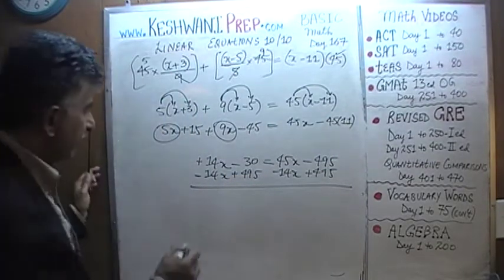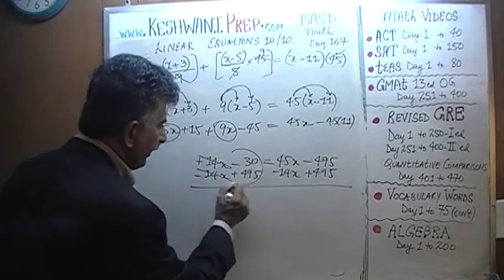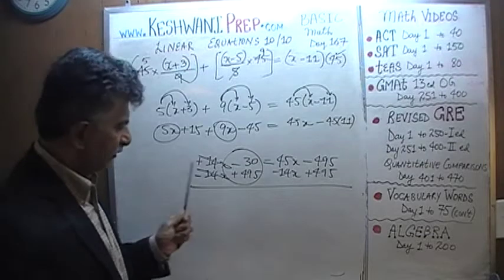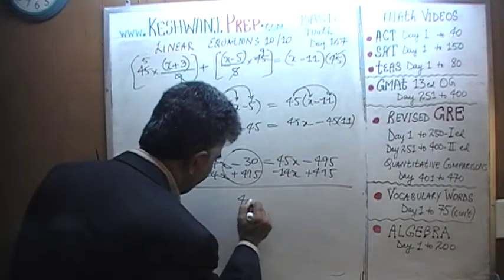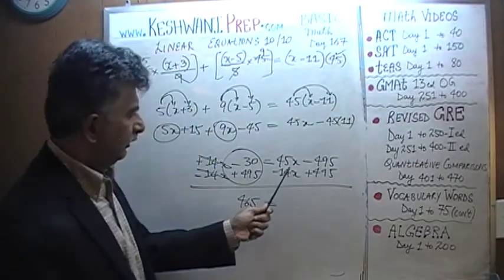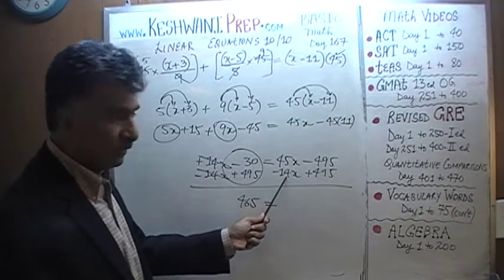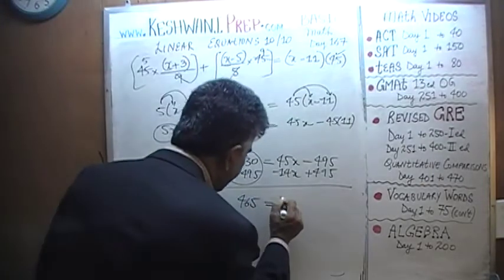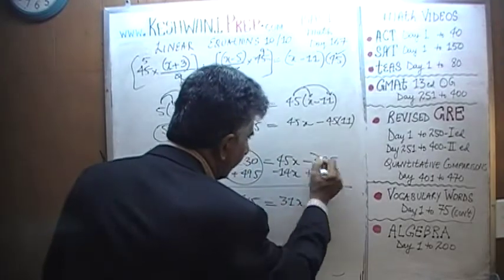Now positive 14x and negative 14x, they can kill each other. Here we have negative 30 and a positive 495. 495 minus 30 is going to be 465. 465 equals 45 minus 14. 45 minus 15 would have been 30. So it's going to be 31. 31x and that's going to go away.